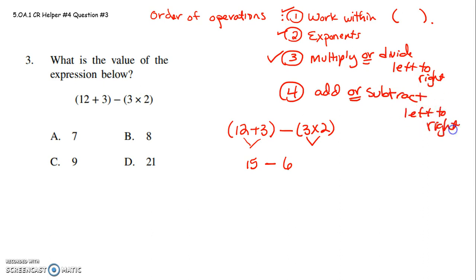And you're like, woo-hoo, all I have is a subtraction left. 15 minus 6, I believe, is 9. So for number 3 on your CR, please make sure you follow the order of operations.